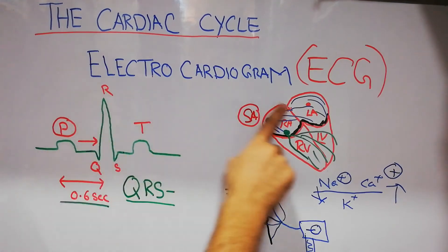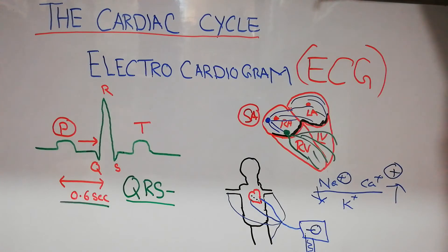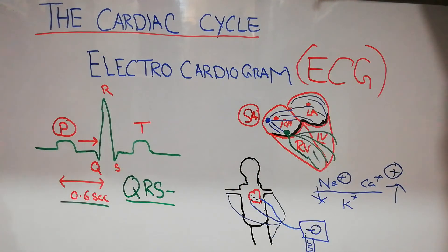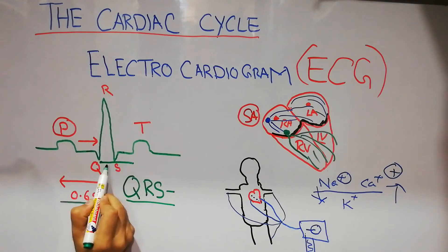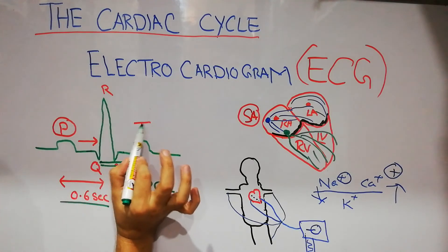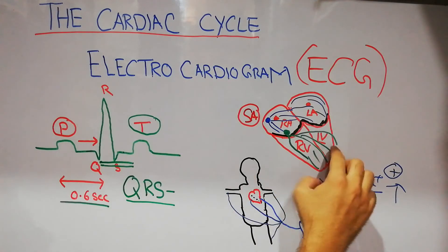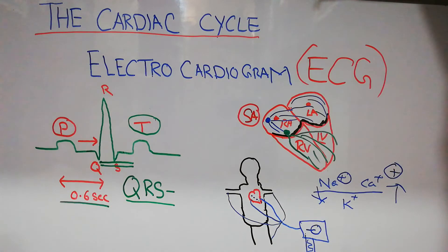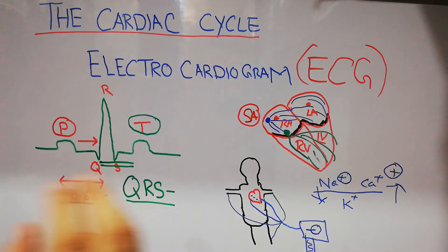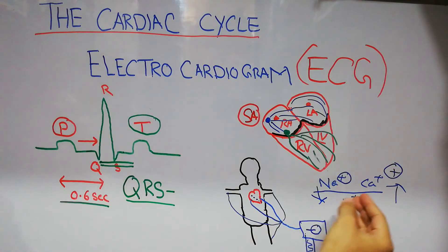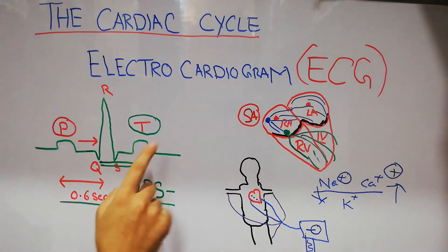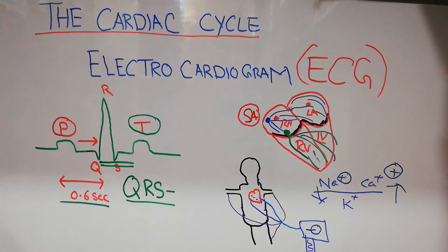So the P wave represents depolarization of the atria, and the QRS complex represents the contraction or systole of the ventricles. After the QRS complex, after a delay, we have another wave — the T wave — in which repolarization of the ventricles occurs. This means potassium ions have moved out of the membranes of the cardiac muscle cells, allowing repolarization. That repolarization is recorded as the T wave.